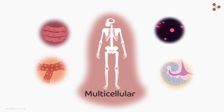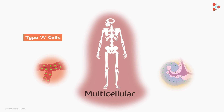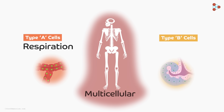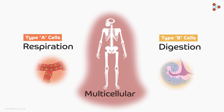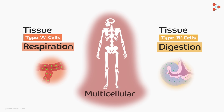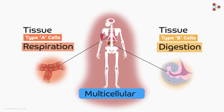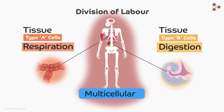There are groups of cells which carry out different functions. For example, all cells of type A will carry out the function of respiration and cells of type B will carry out the process of digestion. Each cluster of cells is called a tissue, and each tissue carries out a specific function. Such organisms with many tissues are called multicellular organisms.